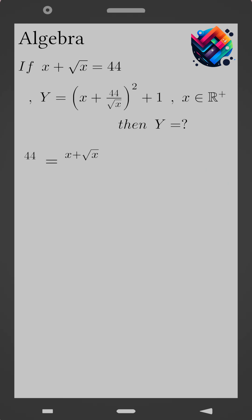From the given condition x plus square root of x equals 44, divide both sides by the square root of x. We get 44 over the square root of x equals x over the square root of x plus 1, which simplifies to square root of x plus 1.